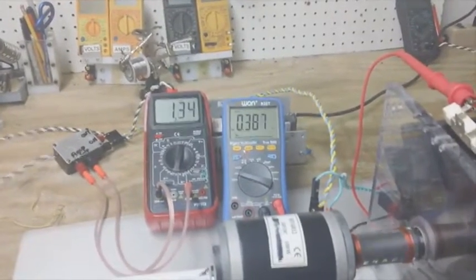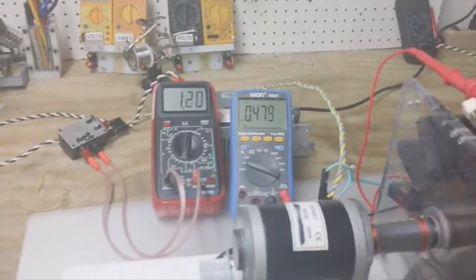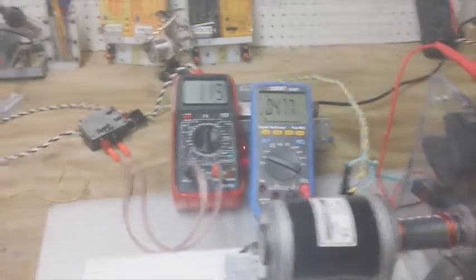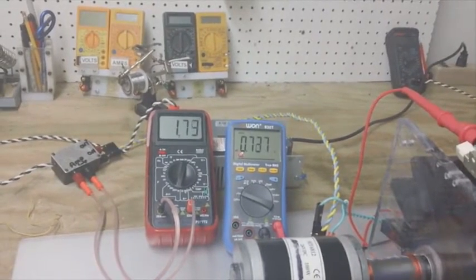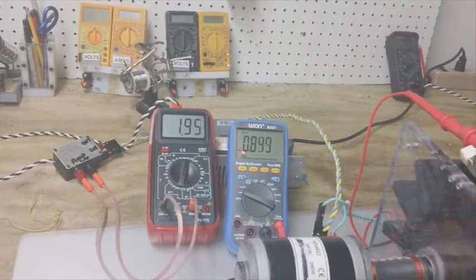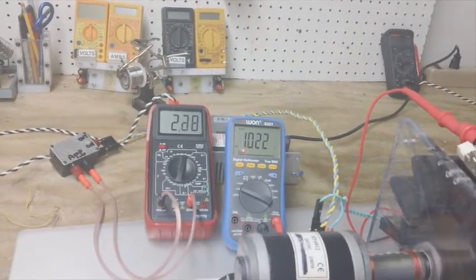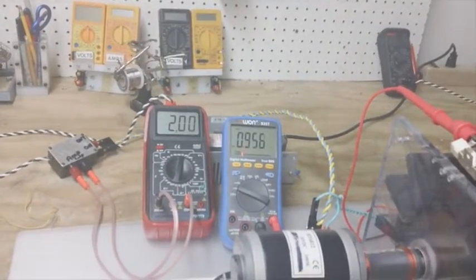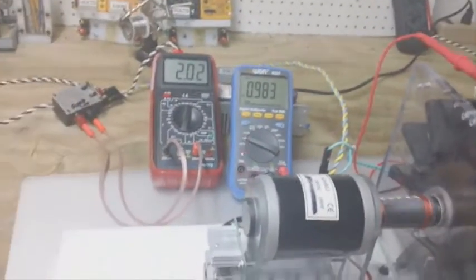There we go. One volt. It's generating one volt while consuming 27 ohms of energy at 2 amps.